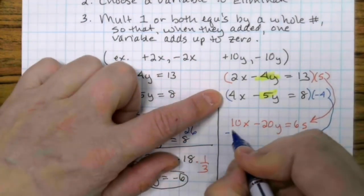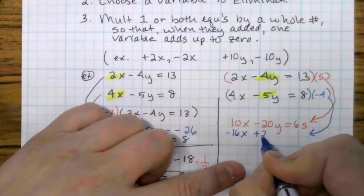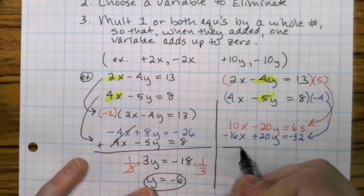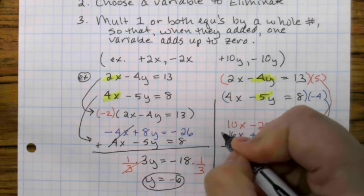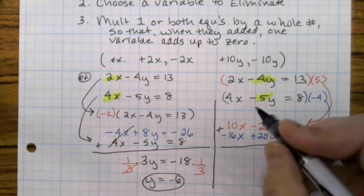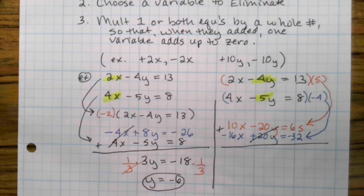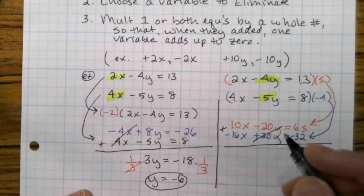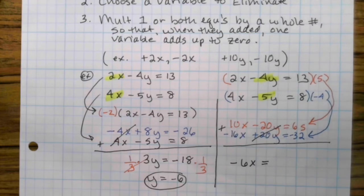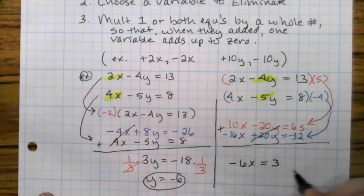So that gives us 10x minus 20y equals 65. And then the second one, I'm going to multiply. I'm looking for a positive 20. I'm going to multiply by negative 4. So negative 16x plus 20y equals negative 32. Draw a line. Now we're ready to add them up for linear combination. Negative 20 plus 20 is 0. It goes away. 10 minus 16 is a negative 6x equals 65 minus 35, which is 33.